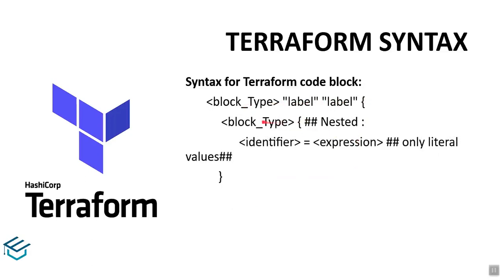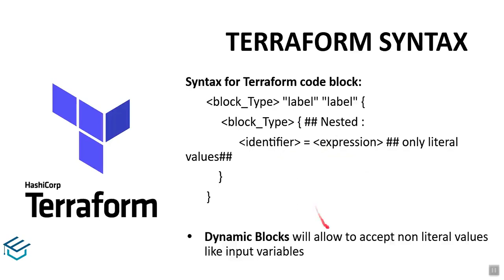For nested code blocks — for example, when creating an aws_vpc or a VPN, you have CIDR values. A nested block runs inside another block, and the same syntax applies — a block within a block, but with different content inside. Dynamic blocks will have non-literal values and accept input variables.